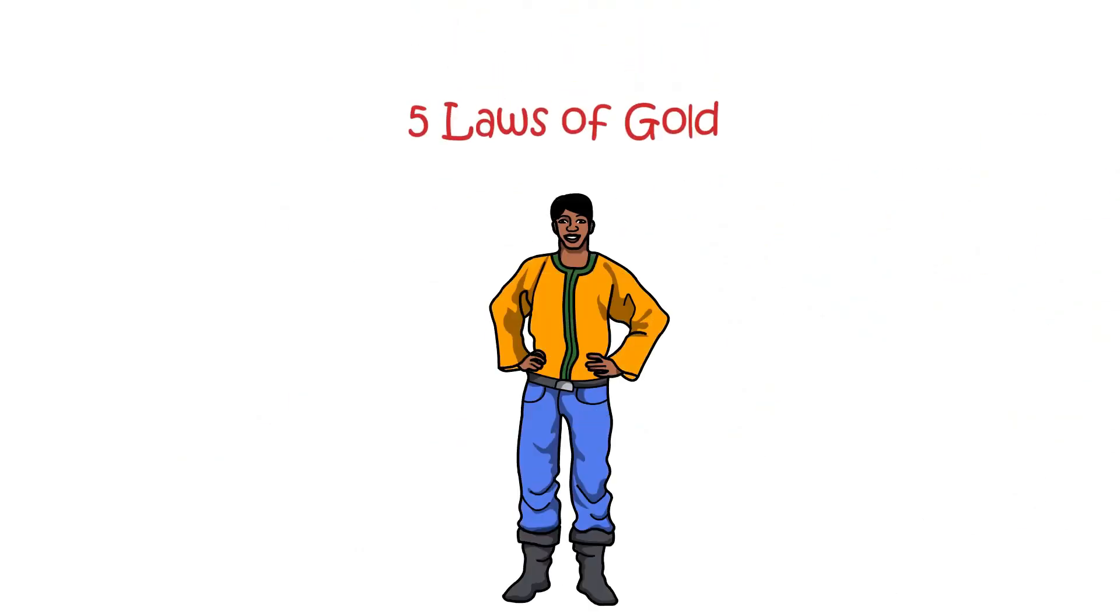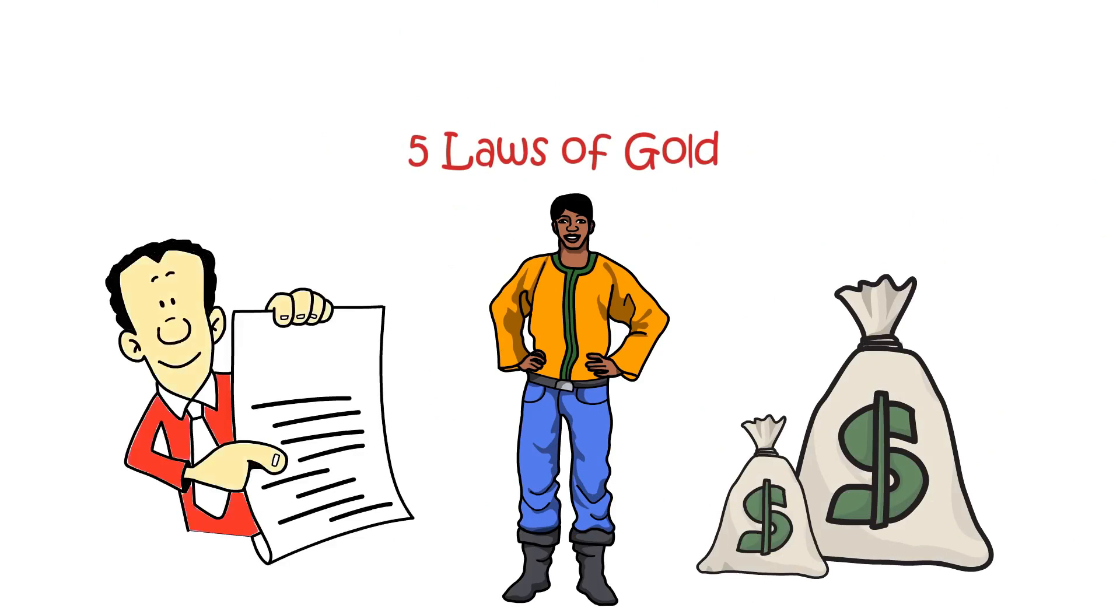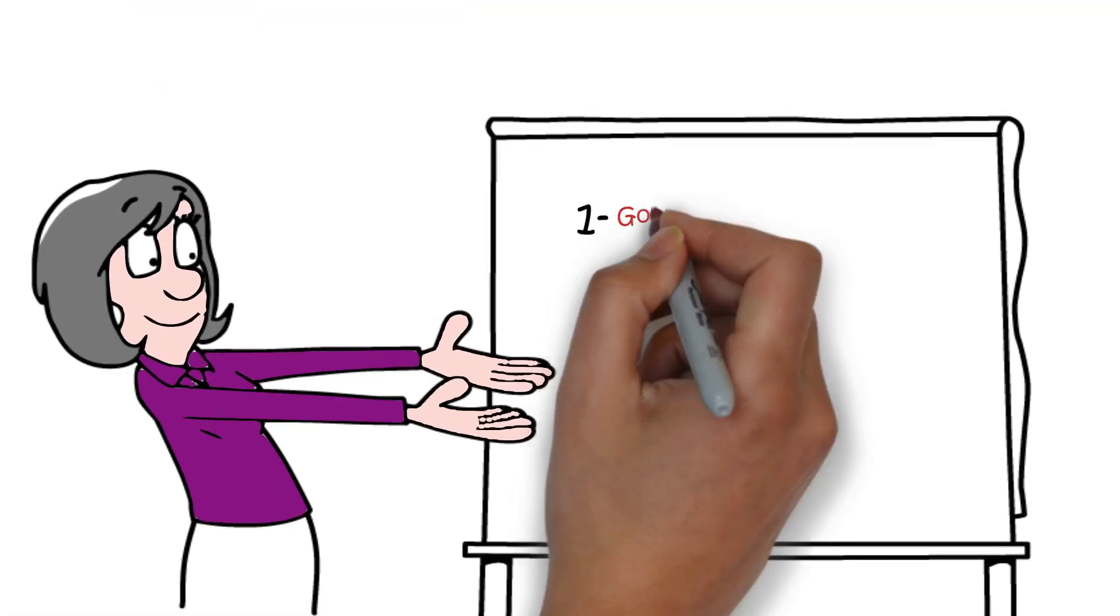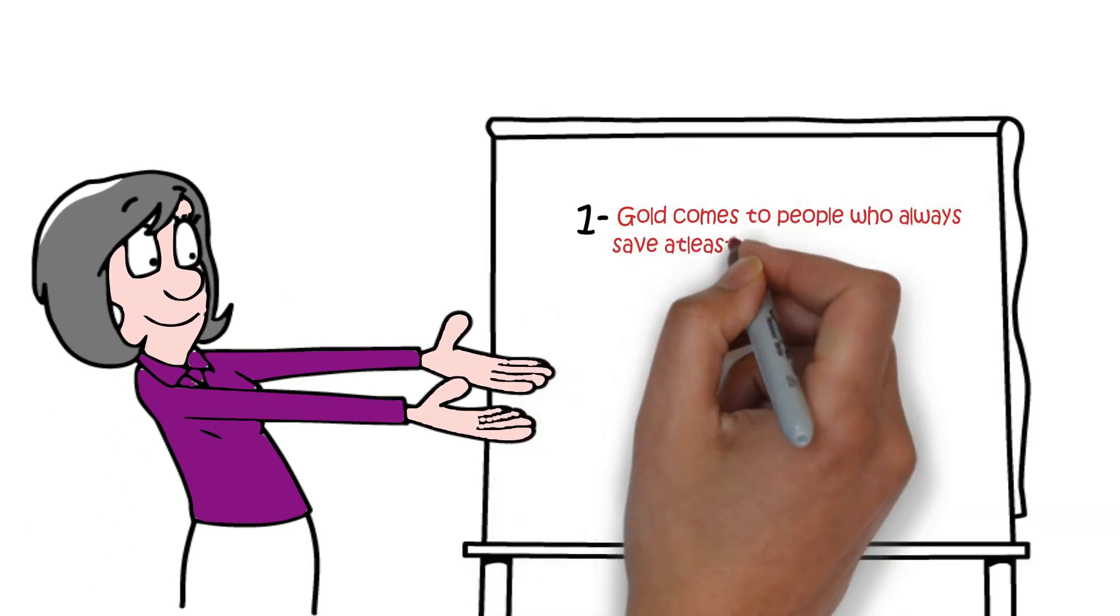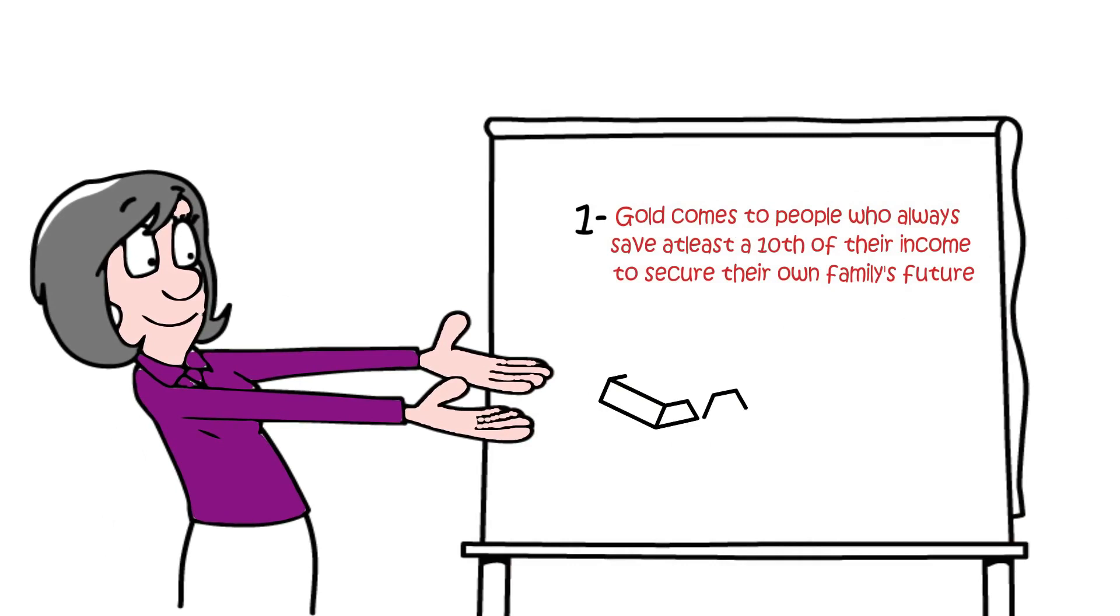Arkad also devised the five laws of gold. Wealth is reserved for those that know these laws and follow them. Law number one, gold comes to people who always save at least a tenth of their income to secure their own family's future. You acquire gold by saving regularly to build wealth.